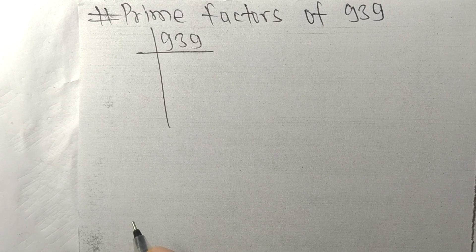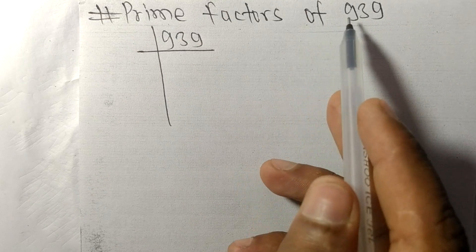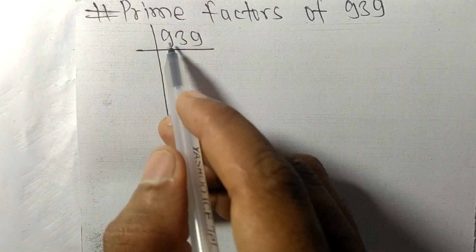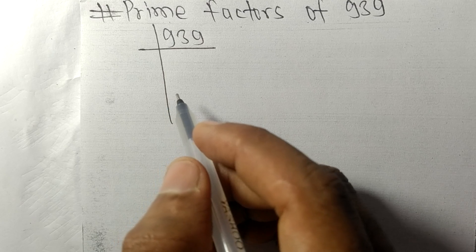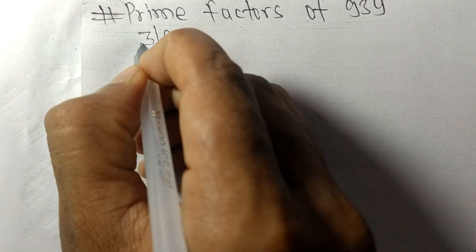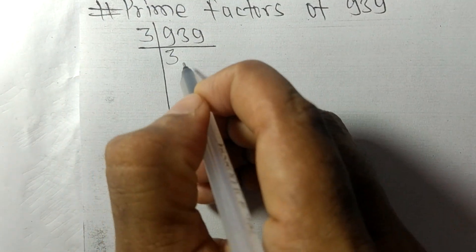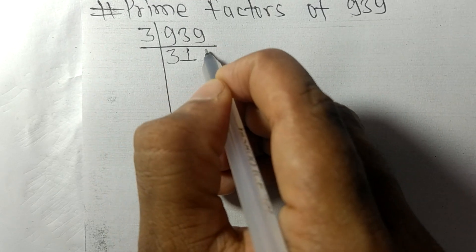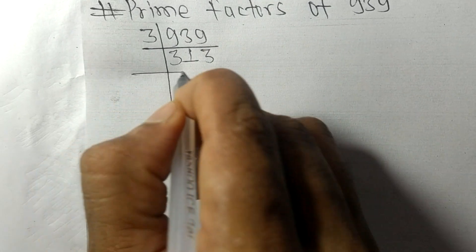Today in this video we shall learn to find the prime factors of 939. So 939 is exactly divisible by 3. 3 times 3 is 9, 3 times 1 is 3, 3 times 3 is 9.